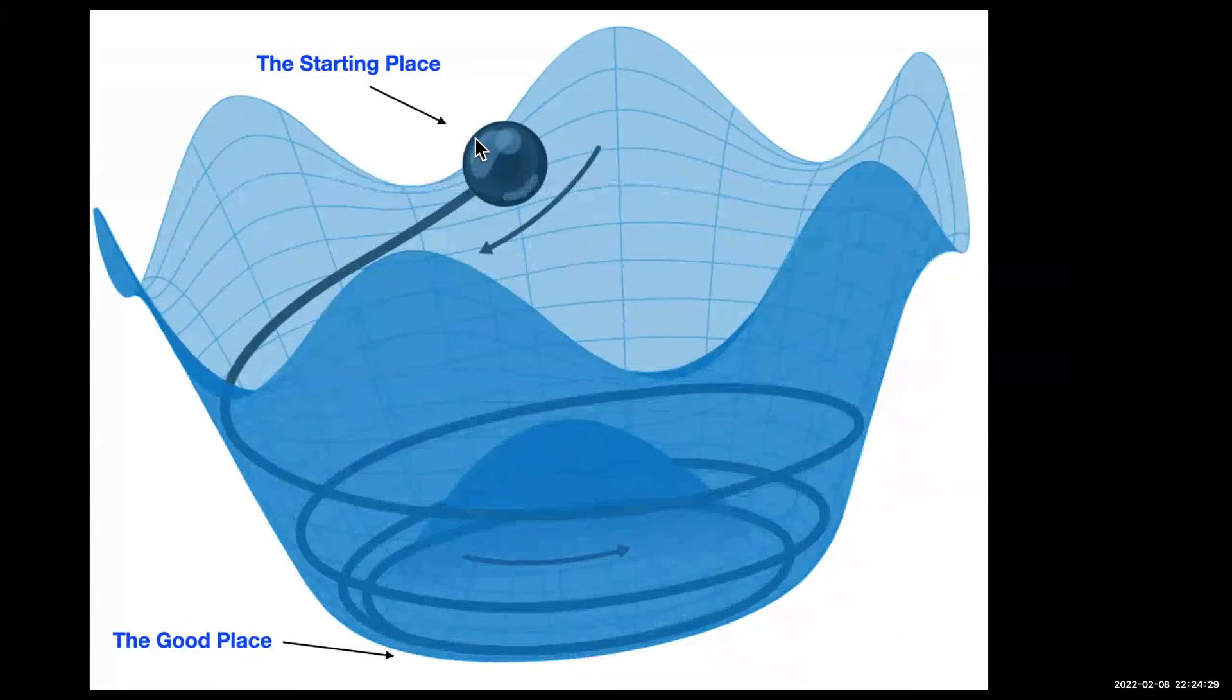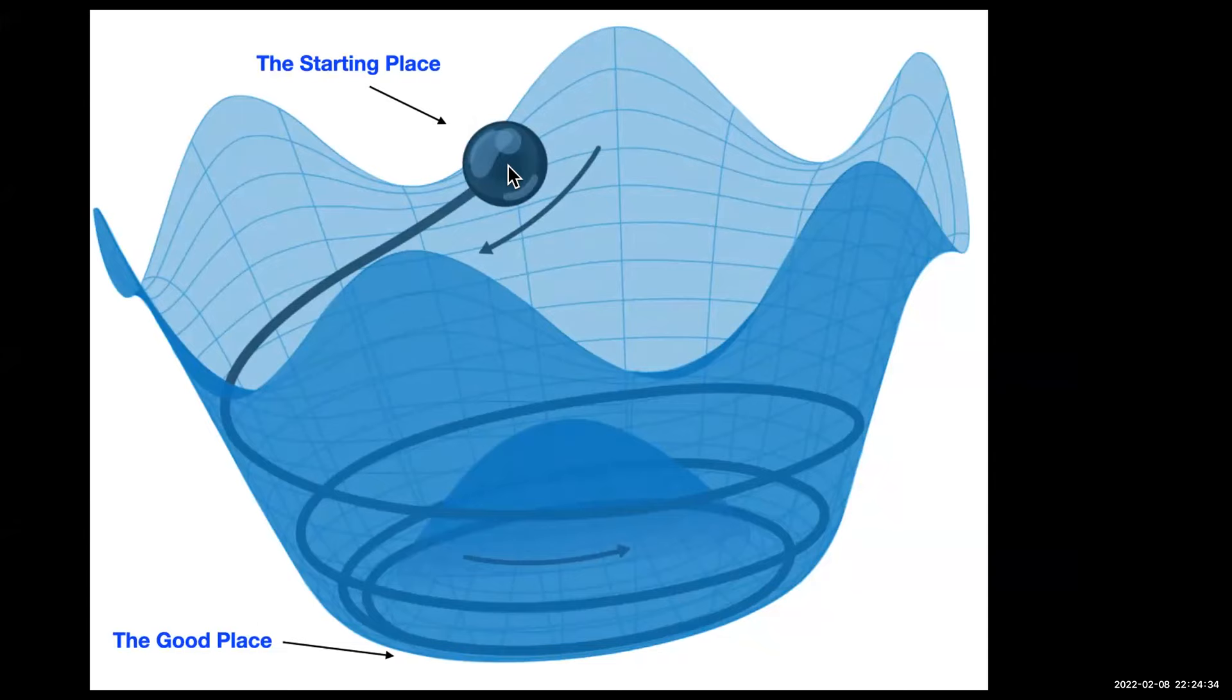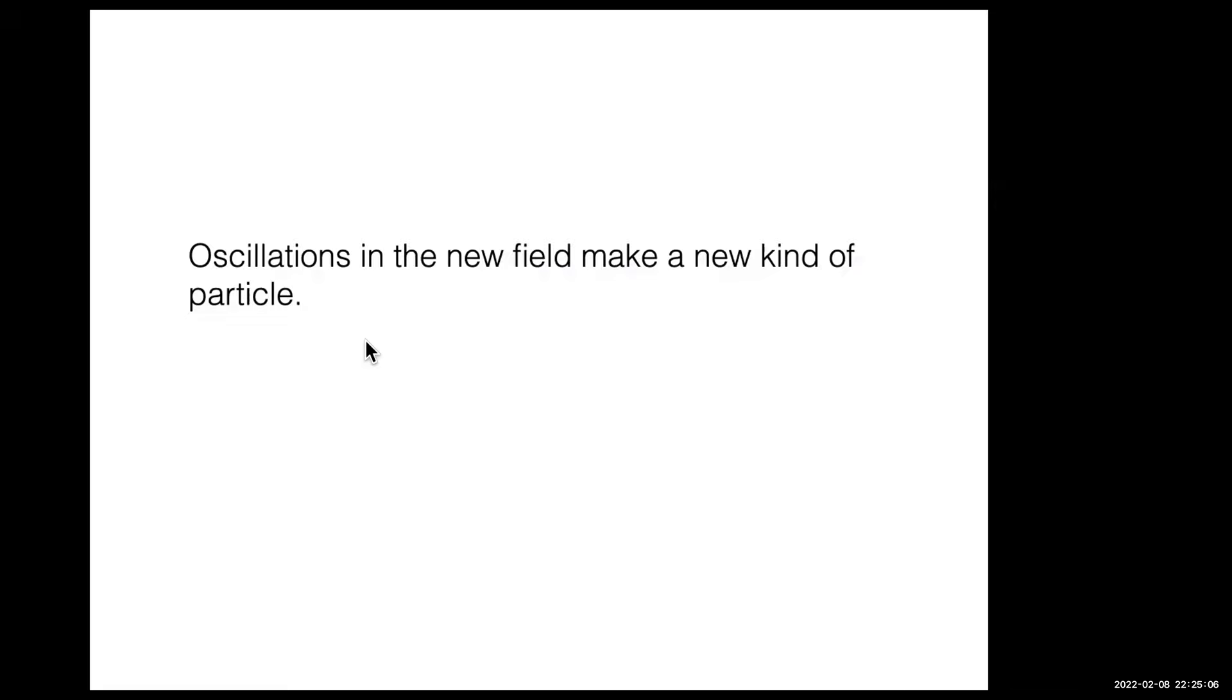This would explain the otherwise mysterious coincidence. It's a remarkable concept because it brings the idea of evolution of what on the face of it seems like a constant of nature into physics. So it's a theory of evolution now, not for animal species, but for the constants of nature. Here's a picture: back in the early universe, you have a field that starts out in some excited state, but as the universe cools and expands, it can lose energy.